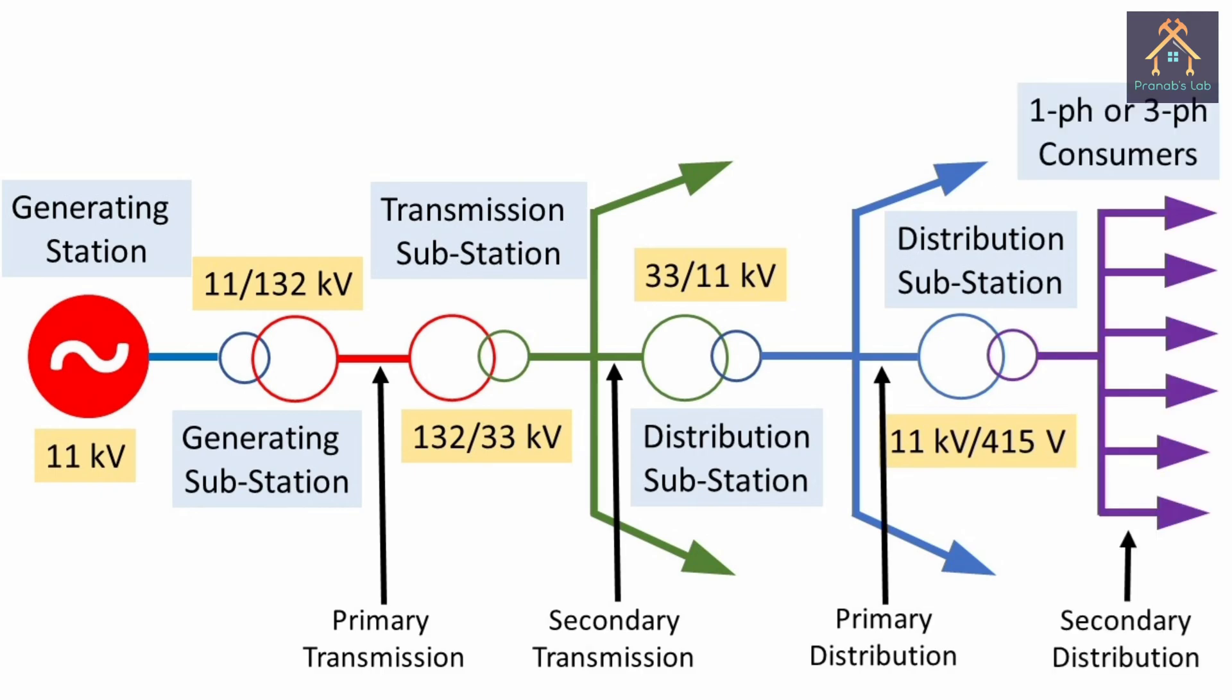From the 415 V line, there are different types of service connections given to the consumers. It is either single phase or three phase and this type of distribution is called secondary distribution.